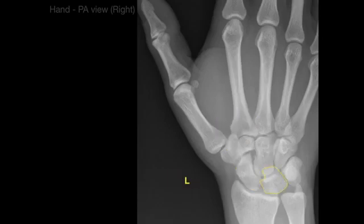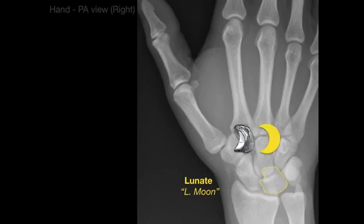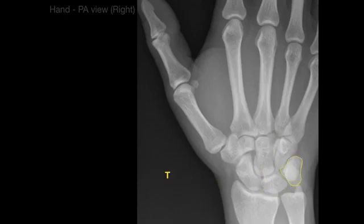Then we have this other bone, and that is L for lunate. Lunate is Latin for moon, because if we take a look at the lunate bone and blow it up, it kind of looks like a half moon. Then we have the next bone, which is T — T stands for triquetrum, Latin for three corners, because it articulates with three bones: the hamate, the lunate, and the pisiform bone.